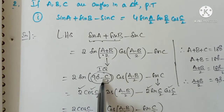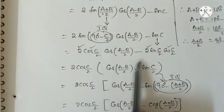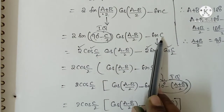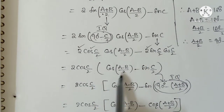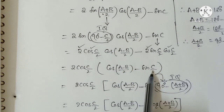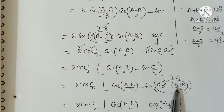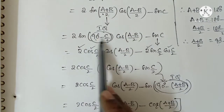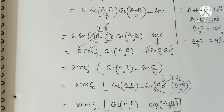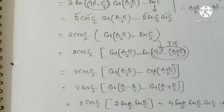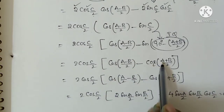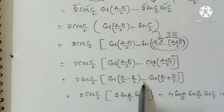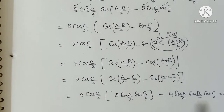Since (A+B)/2 equals 90 minus C/2, we have C/2 equals 90 minus (A+B)/2. Taking 2 cos(C/2) as common, inside we get cos((A-B)/2) minus sin(C/2). Since C/2 equals 90 minus (A+B)/2, sin changes to cos for 90 degrees. So we have cos((A-B)/2) minus cos((A+B)/2), which by the formula cos A minus B minus cos A plus B equals 2 sin A sin B gives A as A/2 and B as B/2. Multiplying the 2s gives our RHS.